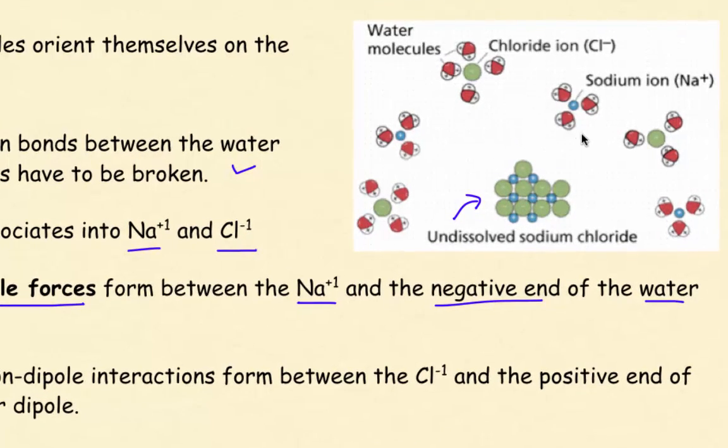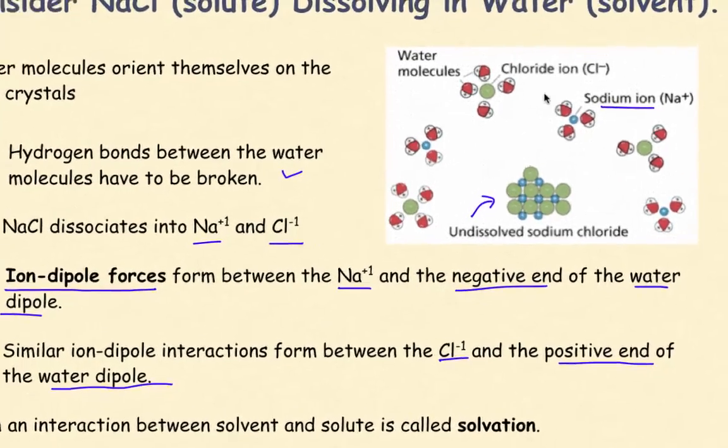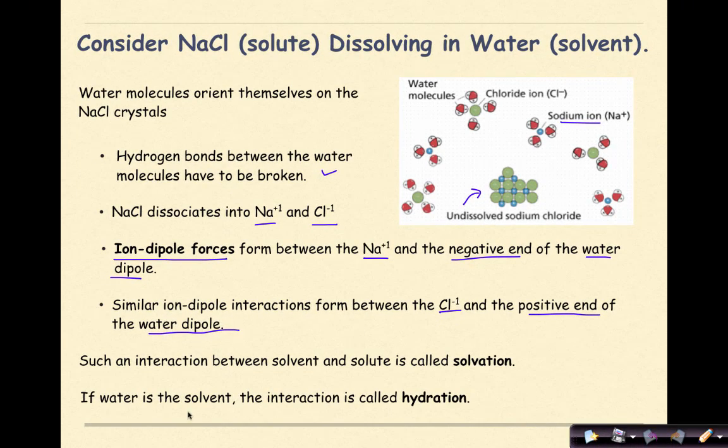Ion dipole forces form between the sodium ions and the negative end of the water dipole. We can see here in our representation that this sodium ion, which is represented by this blue sphere, all the oxygen ends are oriented towards this sodium ion. A similar ion-dipole interaction formed between the chloride ion and the positive end of the water dipole. There's my chloride ion, which is negatively charged, and the positive end of the water molecule, which would contain the hydrogen, is oriented towards that chloride ion. Such an interaction between the solvent and the solute is called solvation. If water is the solvent, the interaction is called hydration.